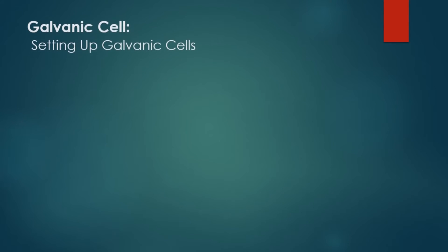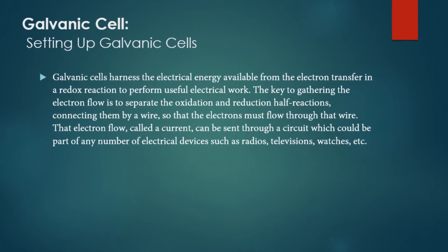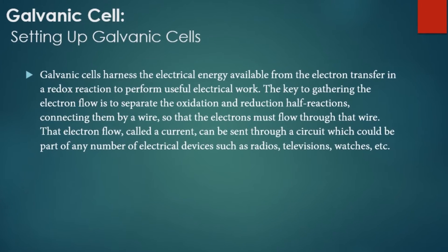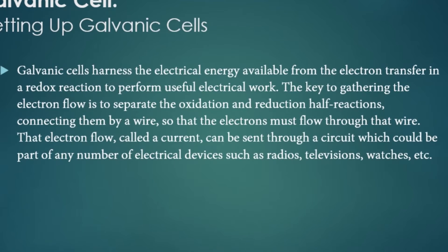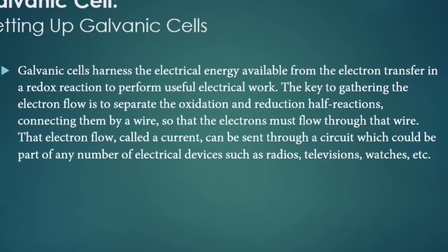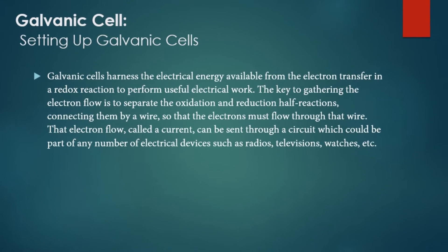Galvanic cells harness the electrical energy available from the electron transfer in a redox reaction to perform useful electrical work. The key is to separate the oxidation and reduction half cells, connecting them by a wire so that the electrons must flow through that wire. That electron flow, called a current, can be used through a circuit which could be part of any number of electrical devices such as radios, TVs, or watches.